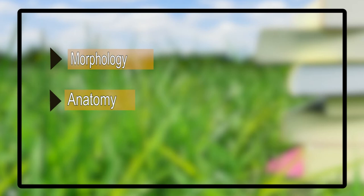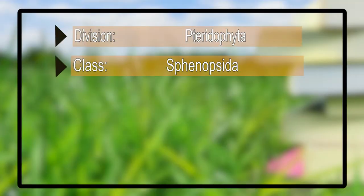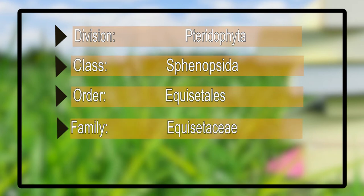Hello everyone. Today in this module we are going to discuss about Equisetum — its morphology, its anatomical details, and also about its reproduction. Before that, we should know the exact systematic position of Equisetum. It belongs to the division Pteridophyta, class Sphenopsida, order Equisetales, family Equisetaceae. There are two Indian species: Equisetum elongatum and Equisetum arvense.